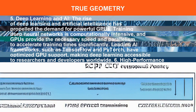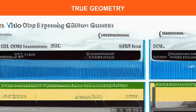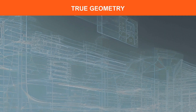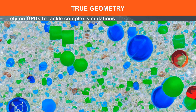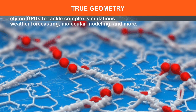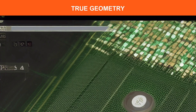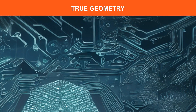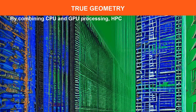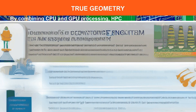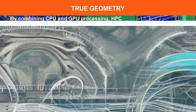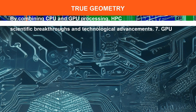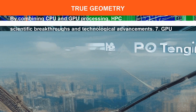Supercomputers rely on GPUs to tackle complex simulations, weather forecasting, molecular modeling, and more. By combining CPU and GPU processing, these systems deliver groundbreaking computational capabilities that drive scientific breakthroughs and technological advancements.